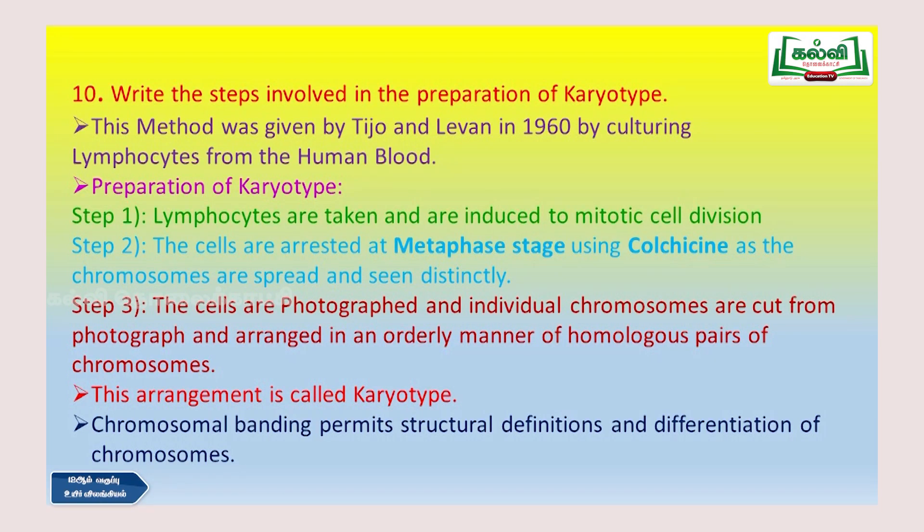Once the cells are arrested at metaphase, we take photographs of these chromosomes individually, then cut those chromosome pictures and arrange them. This arrangement is called karyotype. It is based on chromosomal banding patterns, which helps us know the structure of each chromosome and how they are differentiated from each other.